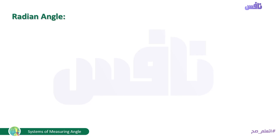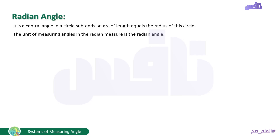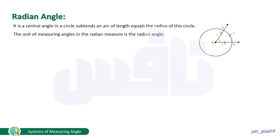Now a new concept: the radian angle. It is a central angle in a circle that subtends an arc whose length equals the radius of that circle. The unit of measuring angles in the radian measure is the radian angle. Looking at the figure: the central angle subtends an arc of length L, and the radius is R. When L equals R, applying θ = L/r gives θ = R/R = 1 rad. This value of 1 is the unit of measurement in the radian system.